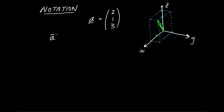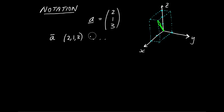Other people may use other notations — for example, a line over the symbol A is commonly used. When people write out the components, they may choose a row form or even pointy brackets. All these notations get at the same thing. Within this course, we'll just use the underline notation introduced above.